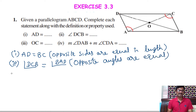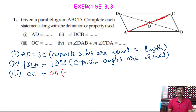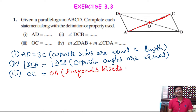Next, third one. OC equal to — where is OC? You see in the diagram, this is OC — some part of the diagonal, actually half of the diagonal. We know that in a parallelogram, diagonals bisect each other. So O is the midpoint of AC. So OC is equal to OA. Why? Because O is the midpoint, and diagonals bisect each other. That is the reason.